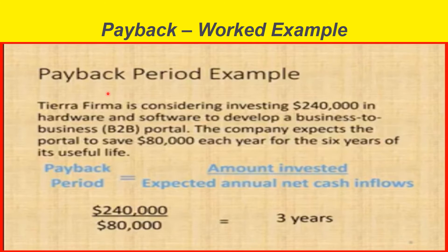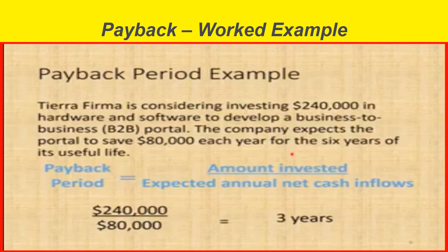Here we have our example. TRF firm is considering investing $240,000 in hardware and software to develop a business-to-business portal. The company expects the portal to save $80,000 each year for the six years of its useful life. The payback period equals the amount invested over the expected annual net cash inflows. Because we have the same amount each year — it's an annuity — we can use this formula: $240,000 divided by $80,000 equals three years.